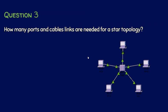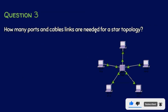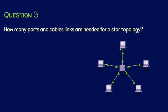Question number 3: How many ports and cables are required for a star topology? In a star topology, there is a central node and every other node is connected to it. If we observe five devices, we might say there are five ports — but that is wrong, because the central device also needs ports. In the entire scenario with five devices, there are actually ten ports total.